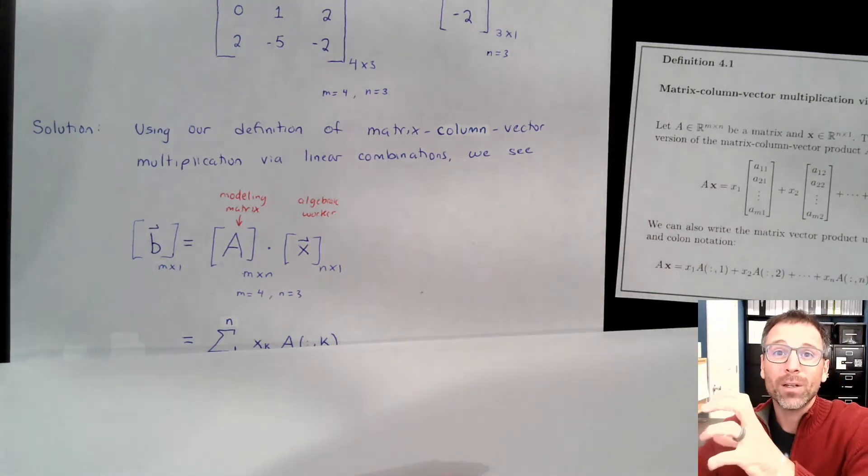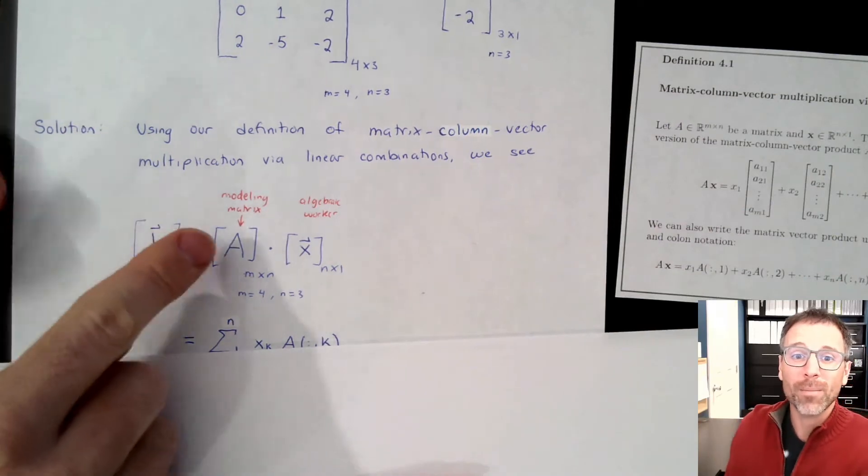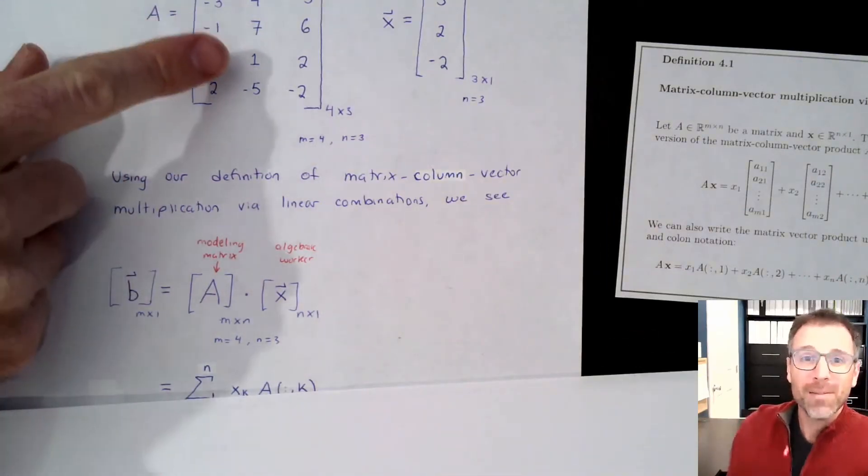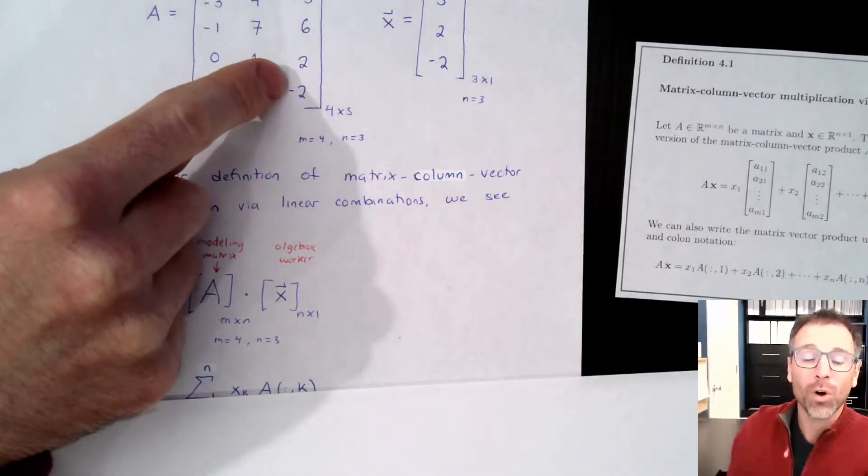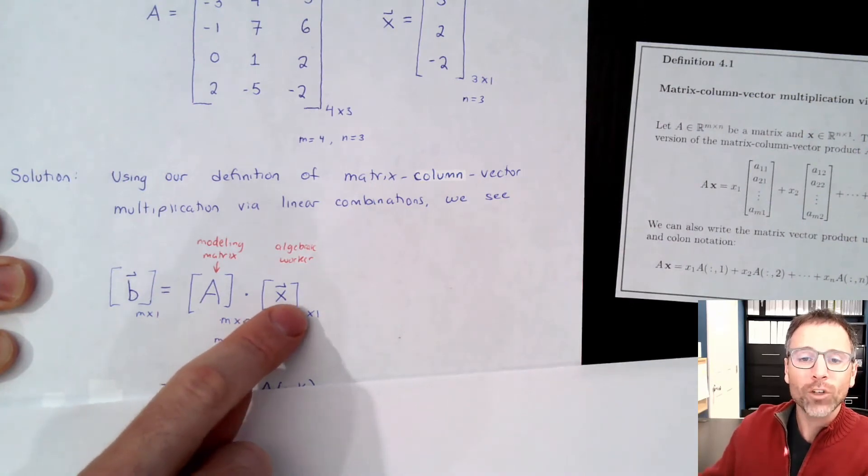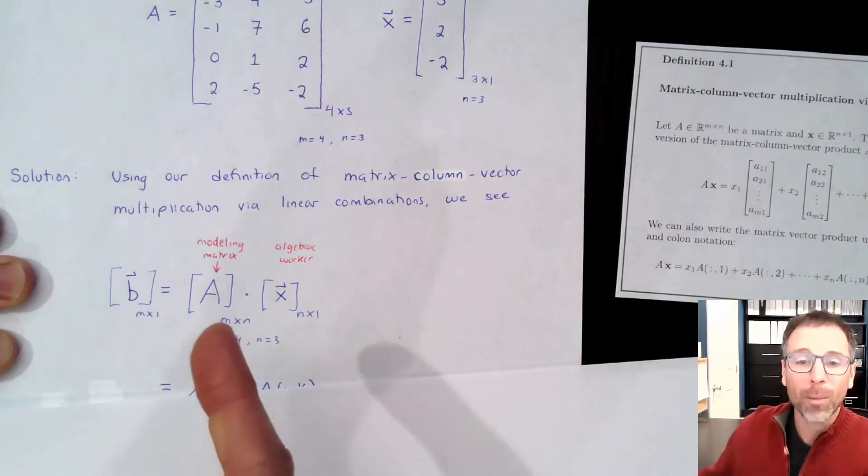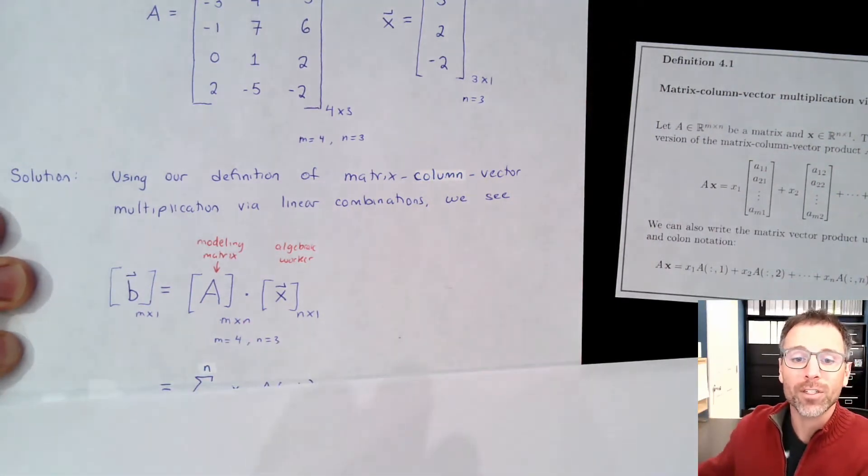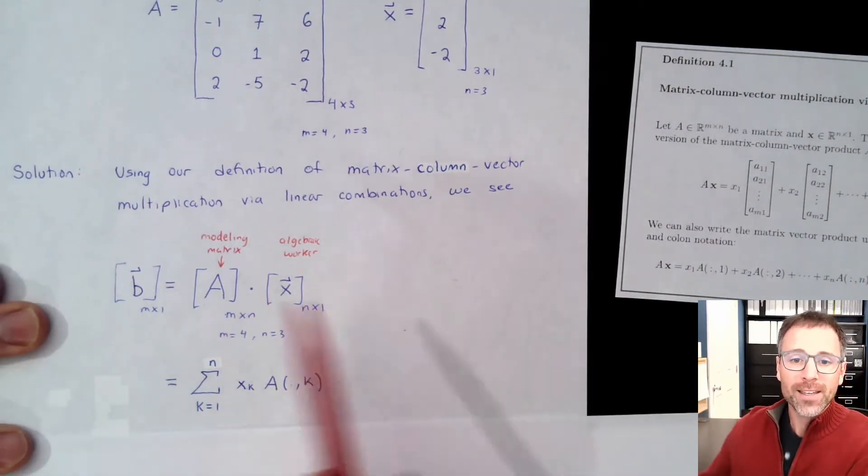And often the way that we generate the model leaves these things to be not very nice. So calculating matrix-vector-multiplication here actually requires a ton of work. Later what we'll see is that we use algebraic workers to transform our modeling matrix into an equivalent problem that is much more algebraically succinct and easy to read off the solution or use code to produce that solution.